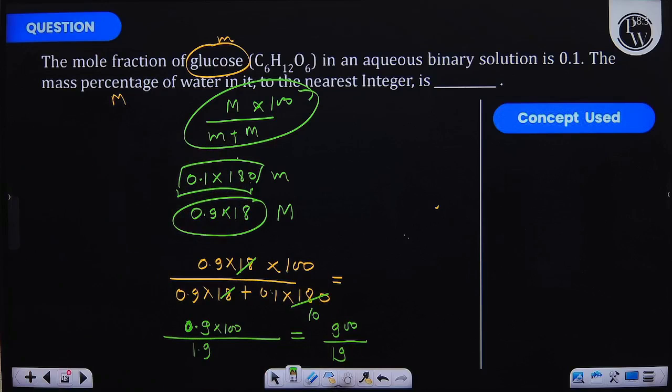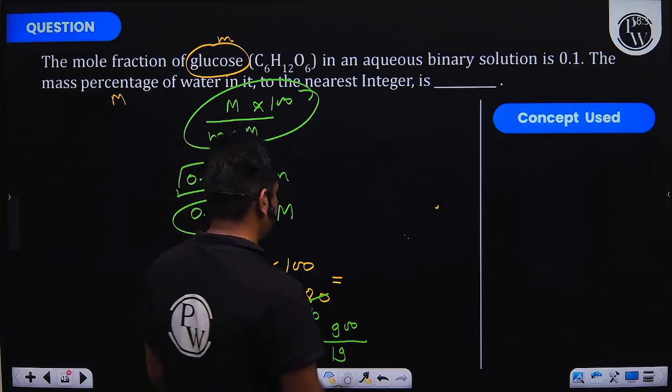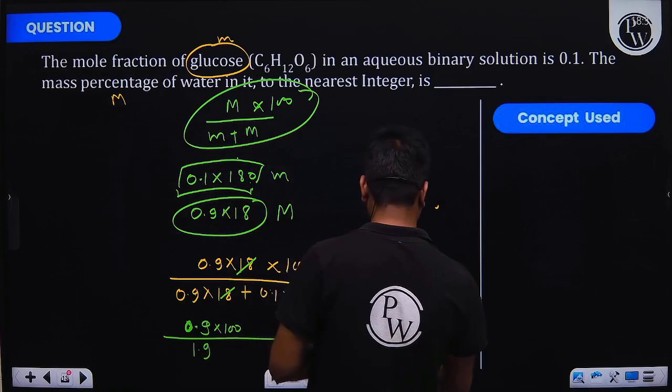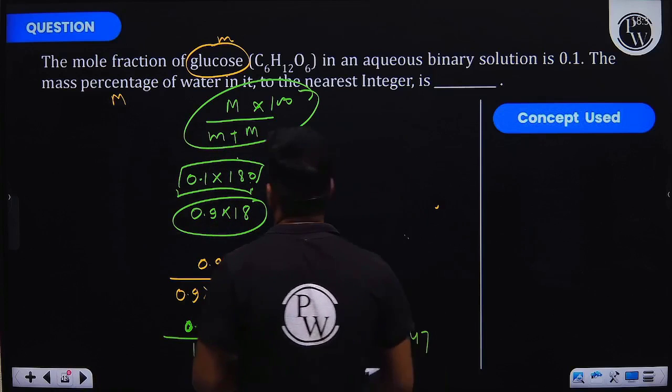This is the value of the mass percentage of water. You can solve it, and it will give you the value approximately 47. To the nearest integer we can see the answer is 47.